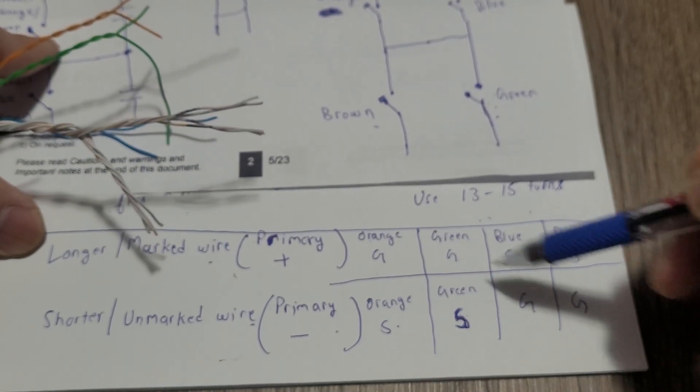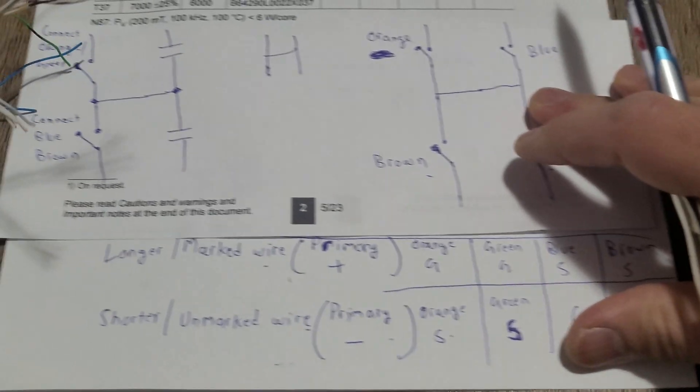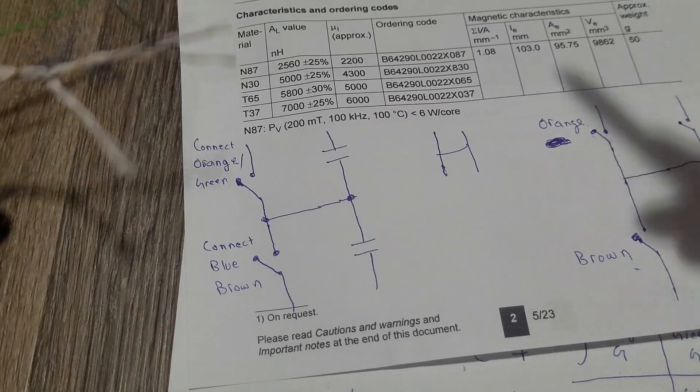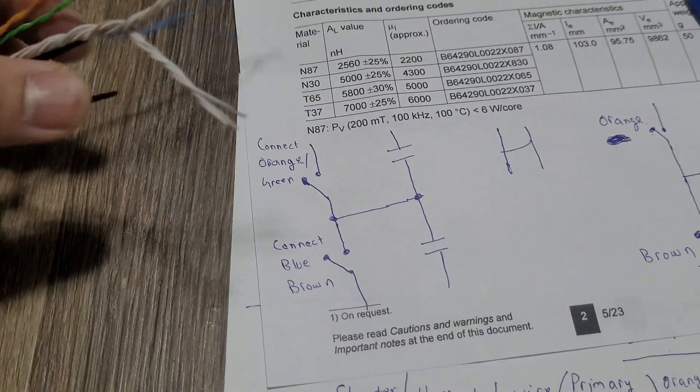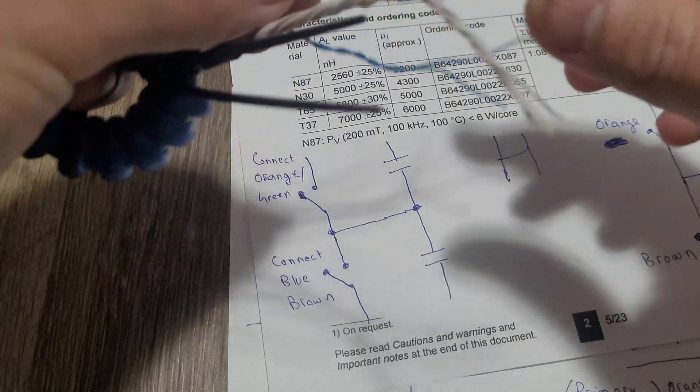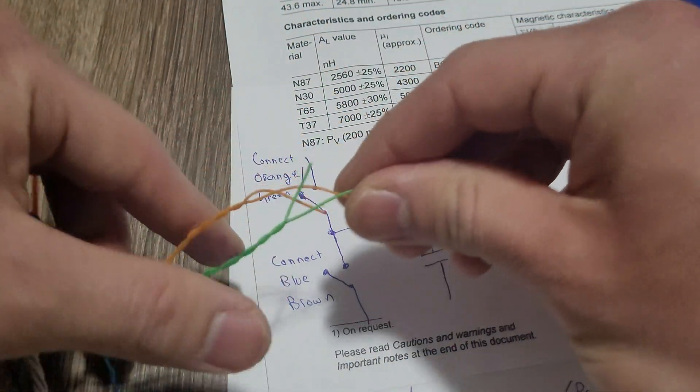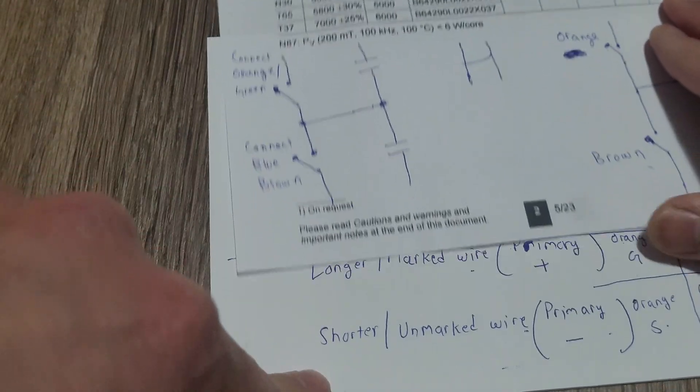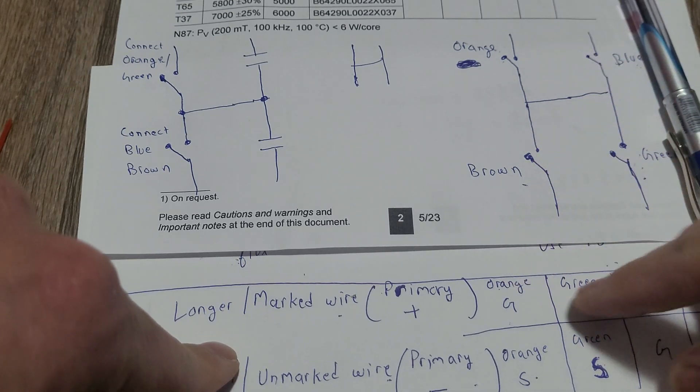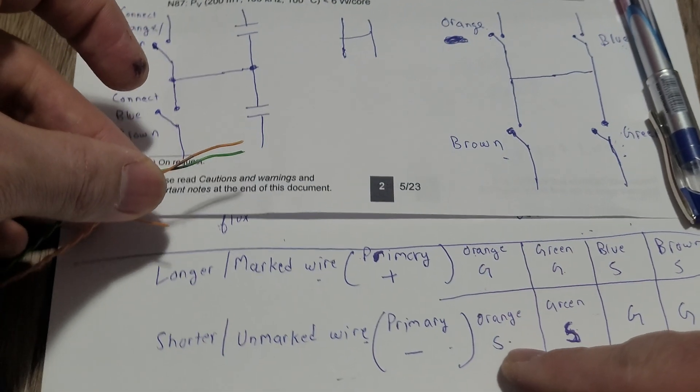And for half bridge, so you have only two MOSFETs or IGBTs, so what you can do is just connect orange and green. Just connect the longer wires here. So as we saw earlier, orange and green both gate, longer ones marked wires. The shorter ones unmarked ones at the source. So connect these two gate and these two shorter ones source. Just strip them and twist them together and connect them.